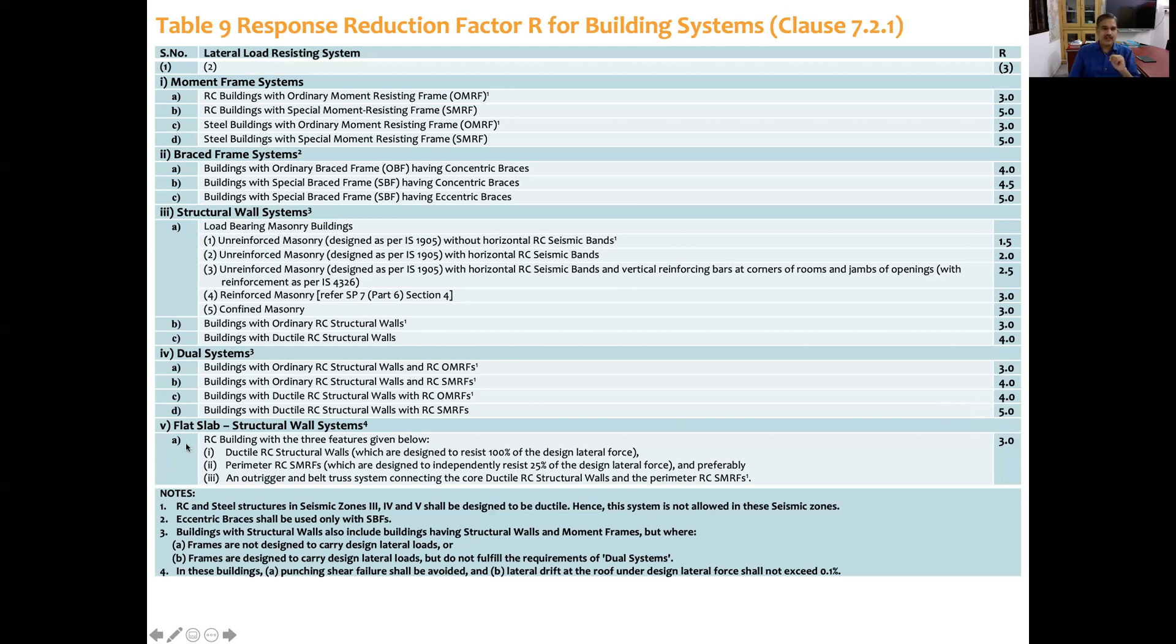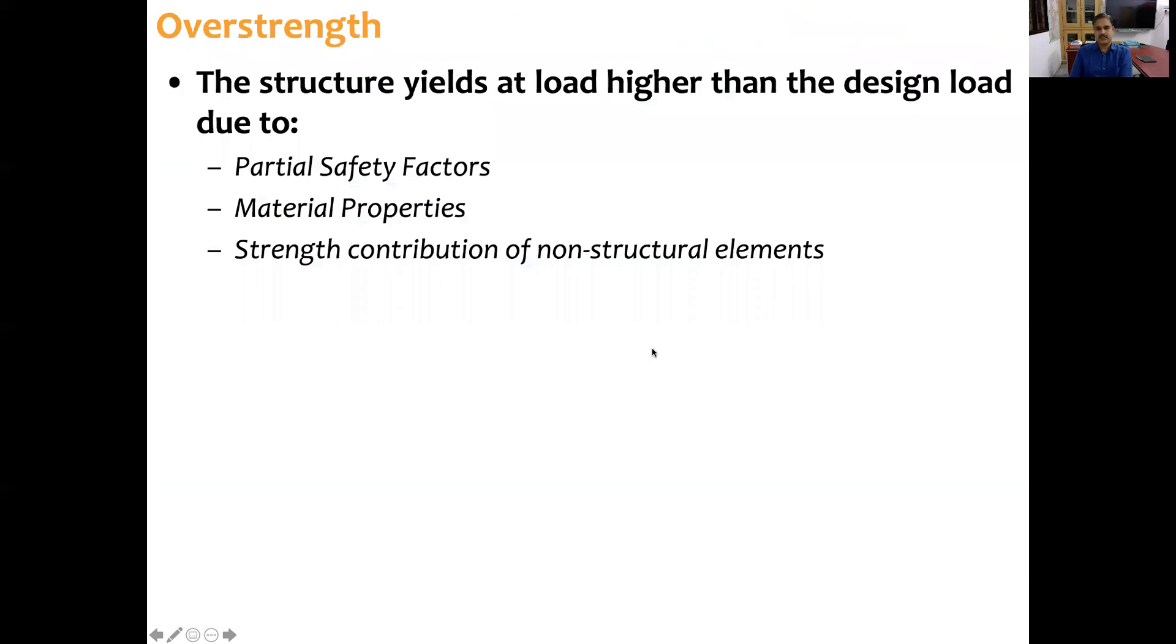The fifth category of structural system is flat slab structural wall system. For all the flat slab systems, code allows only 3 as a response reduction factor, but puts a condition that punching shear should be avoided, and also lateral drift should not exceed 0.1%. These are the recommendations of the code for various structural systems.